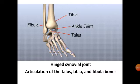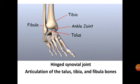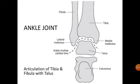The ankle joint is a hinge synovial joint that is formed by the articulation of the talus, tibia, and fibula bones. It is a hinge synovial joint formed by the articulation of three bones — talus, tibia, and fibula — which together form the ankle mortise.